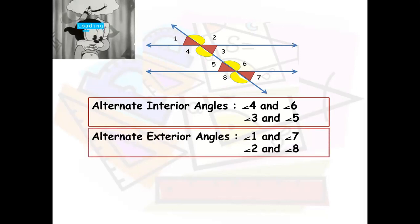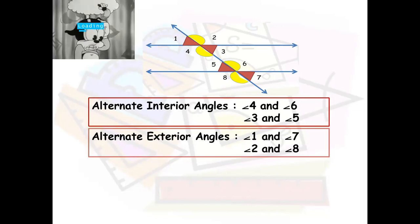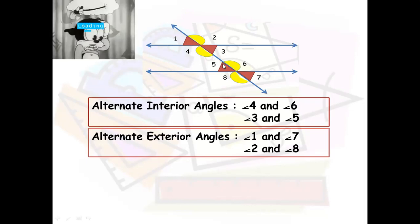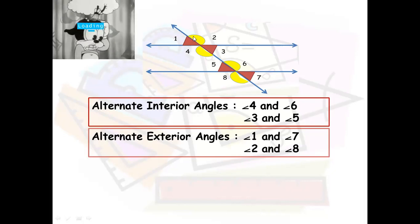Now let's see alternate exterior angles. Exterior means outside. Angles one and seven are opposite exterior angles — those are alternate exterior angles. Angles two and eight are also alternate exterior angles. Again, notice their colors are equal, so angle one equals angle seven, and angle two is congruent to angle eight. Also note that angles one and three are vertically opposite angles — they are in the shape of a V and are opposite to each other, so they are equal.